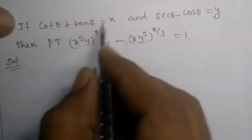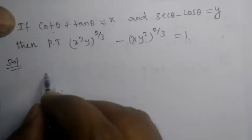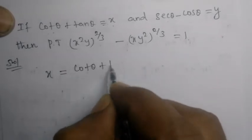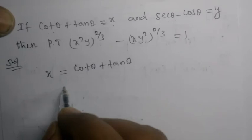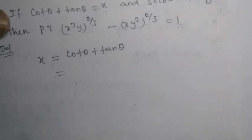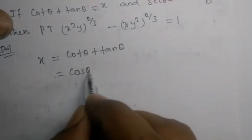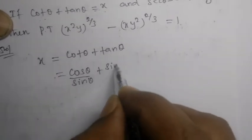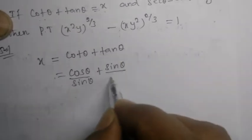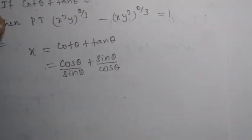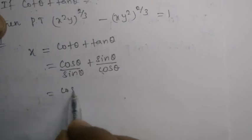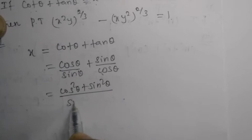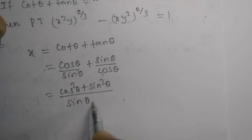Now we will try the next subject. Given x and y values: x is equal to cot theta plus tan theta. Substituting, cot theta is cos theta divided by sin theta, and tan theta is sin theta divided by cos theta.